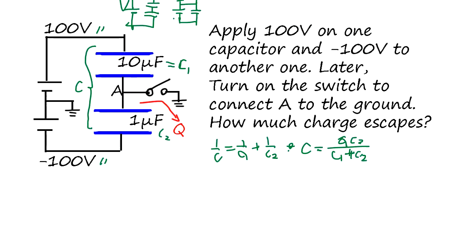Let's calculate: 10 microfarad plus 1 microfarad equals 11 microfarad, so it's going to be 10 divided by 11, which equals 0.91 microfarad.